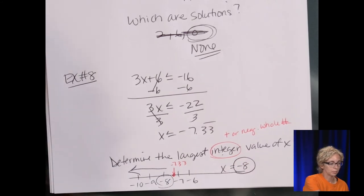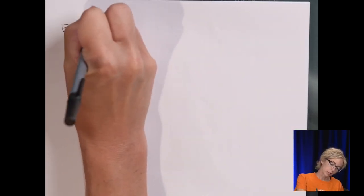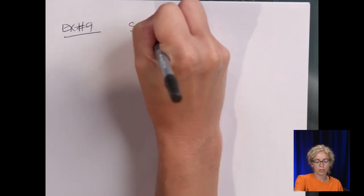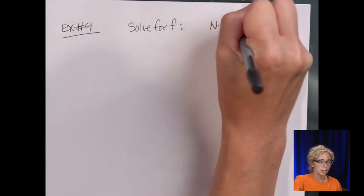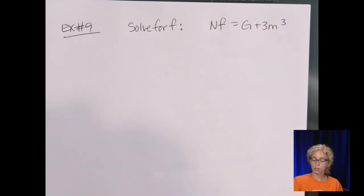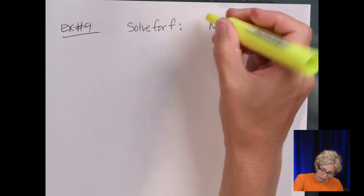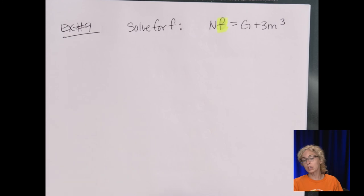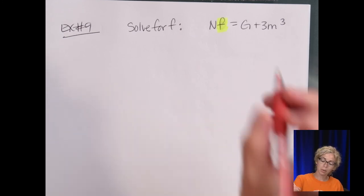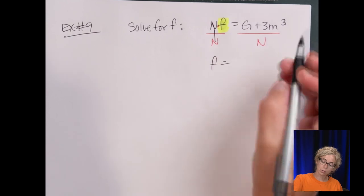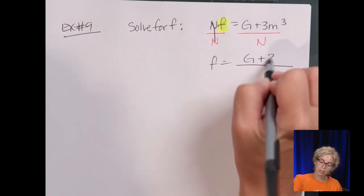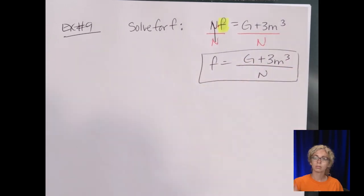All right, our last section. Literal equations. Fun, fun. So, we'll do a couple of these. So, example number 9. We have, we're going to solve for f. And the equation is nf = g + 3m³. So, if I want to get f by itself, I look at what operation is being performed on f, and then I perform the inverse. So, right now, f is being multiplied by n, so I'd want to divide by n. And my final answer would be f equals this fraction. So, (g + 3m³)/n.